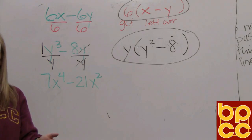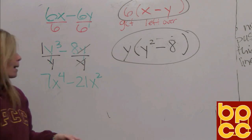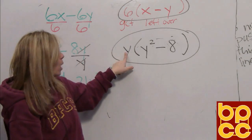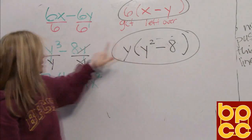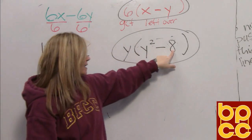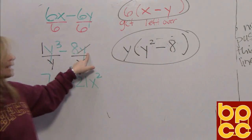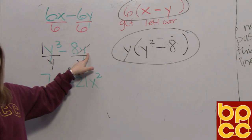Check yourself using the distributive property: y times y squared is y cubed — got it. y times negative 8 is negative 8y — got it.